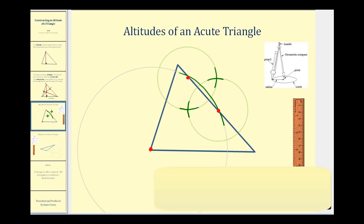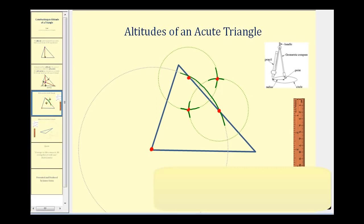Now we're going to take our straight edge and line up the intersection of the arcs with this vertex — this should be our altitude. This red segment is our altitude because it connects this vertex to the opposite side and is perpendicular to that opposite side.